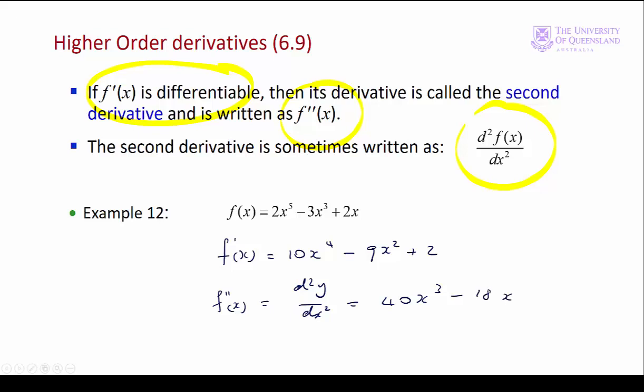The first derivative tells us how a function changes as the independent variable x varies. The second derivative tells us how the first derivative changes with x. As we'll see in coming lectures, this can be very useful. But before proceeding, let's consider a classic example of the relationship between a function and its first and second derivatives.